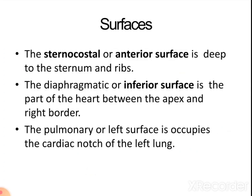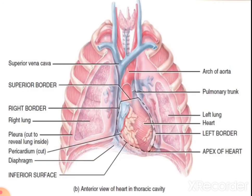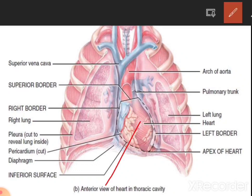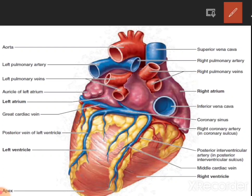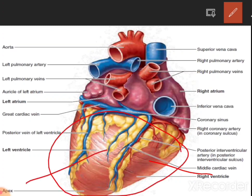The surfaces of the heart include: the sternocostal surface, also known as the anterior surface, which is deep to the sternum and ribs. The diaphragmatic or inferior surface is the part of the heart between the apex and the right border. The pulmonary or left surface occupies the cardiac notch of the left lung. The anterior sternocostal surface comes in contact with the sternum and costal cartilages. The posterior surface is formed by the two ventricles — right and left — forming the diaphragmatic surface.